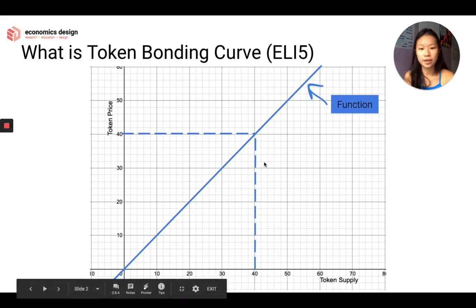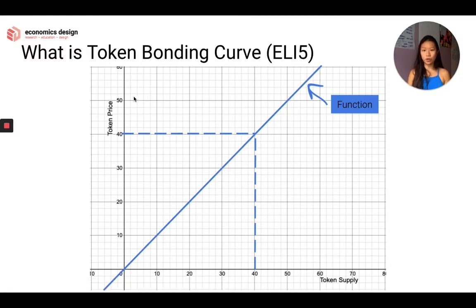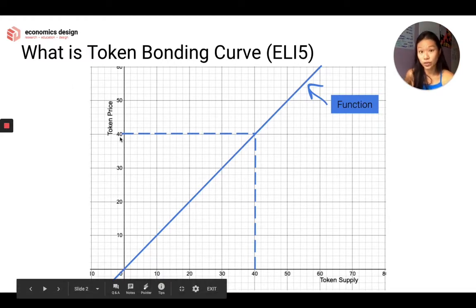So this is a very basic understanding of how the token price corresponds to the token supply. If I am doing 50, so I draw a line, I will draw a line up from 50 to buy the 50th token, and I draw a line across, the price is 50. This is a very basic, straightforward answer to determine the relationship between the token supply as well as the token prices.